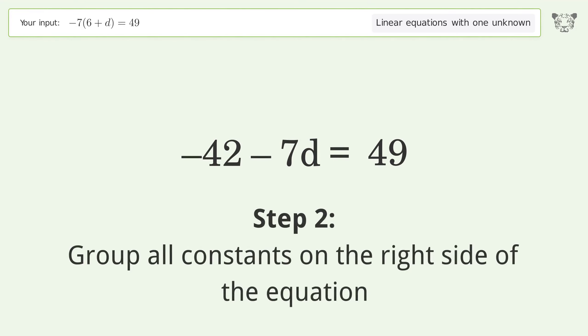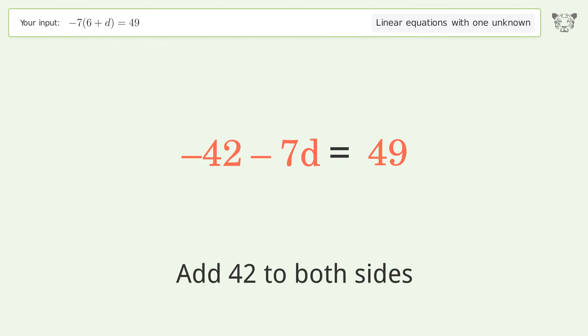Group all constants on the right side of the equation. Add 42 to both sides.